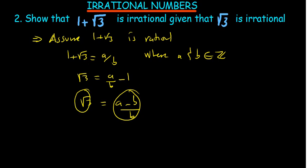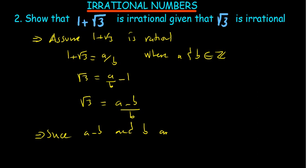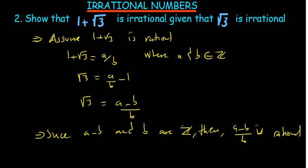But root 3 has been given as irrational. A rational number cannot equal an irrational number. Since A minus B and B are both integers, A minus B over B is rational. But we know root 3 is irrational — an irrational number cannot equal a rational number. Therefore 1 plus root 3 is not rational, meaning it is irrational.